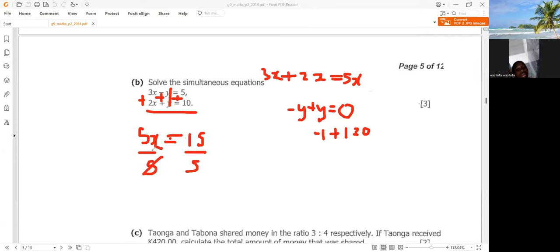So now 5 there, 1, 5 there, 1. And we remain with x, which is equal to 5 into 15, which is 3.